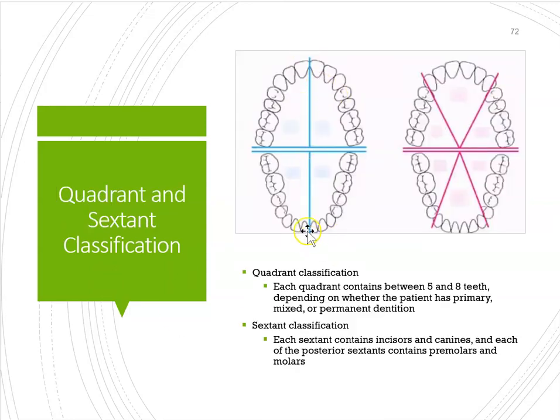We can divide the mouth into four — that is quadrants. We can also divide the mouth into six — and that is sextants.